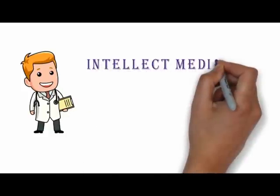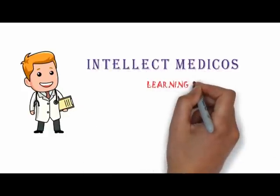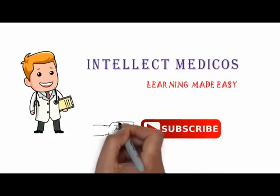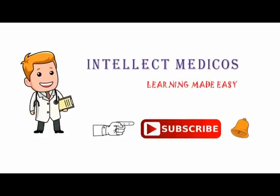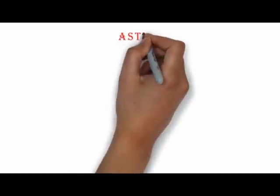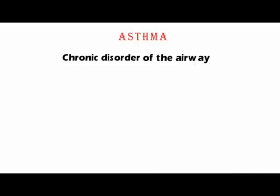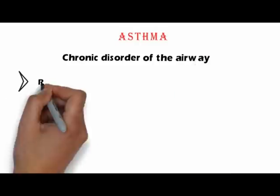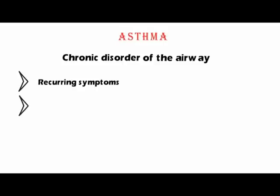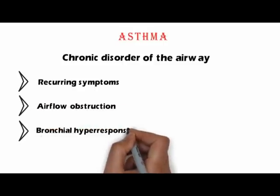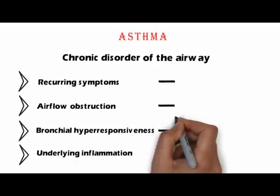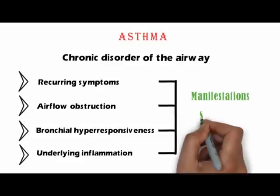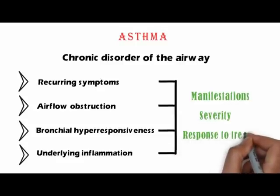Hello friends, welcome again to Intellect Medigos where learning is made easy. Today we will discuss about asthma. It is defined as a common chronic disorder of the airways that is complex and characterized by variable and recurring symptoms, airflow obstruction, bronchial hyper-responsiveness and an underlying inflammation. The interaction of these features determines the clinical manifestations and severity of asthma as well as the response to treatment.